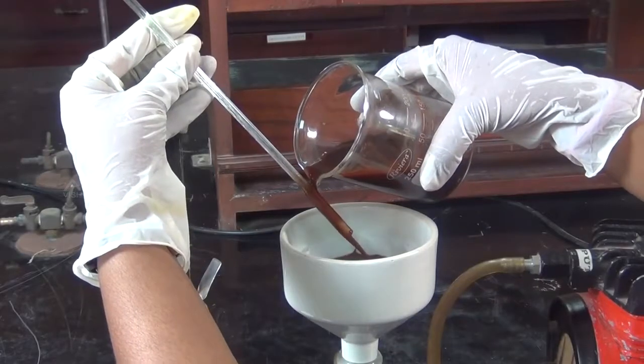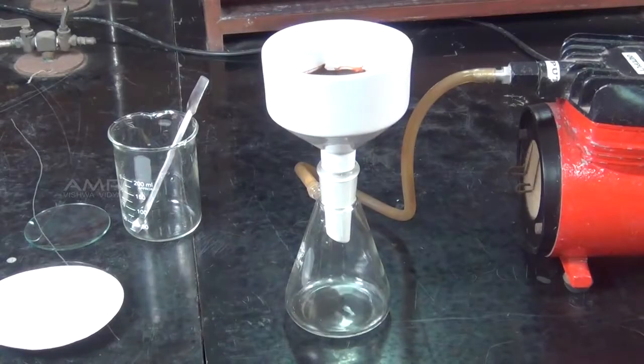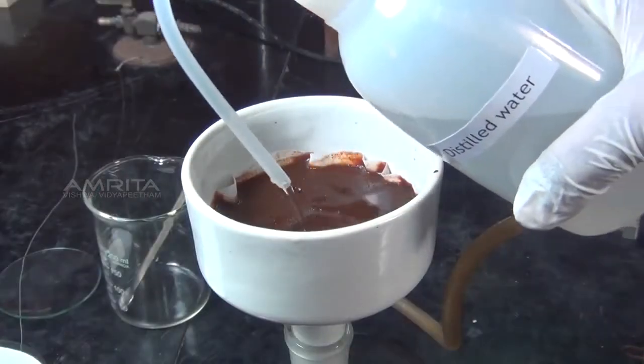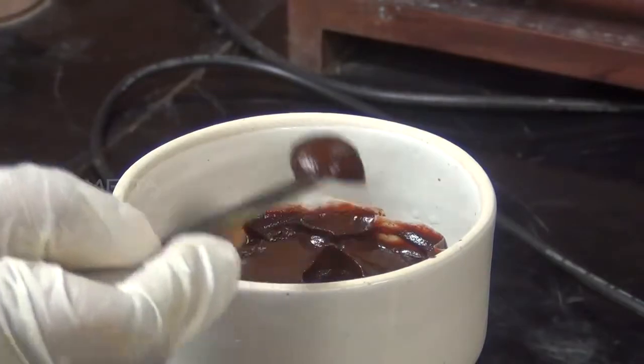Filter the precipitate of ferric hydroxide so formed through a Buchner funnel. Wash the precipitate with distilled water and transfer it into a watch glass.